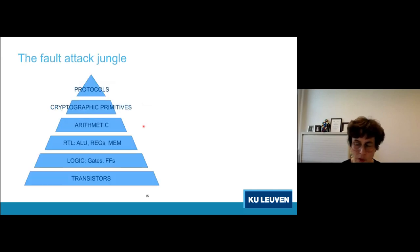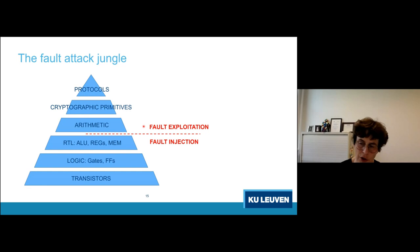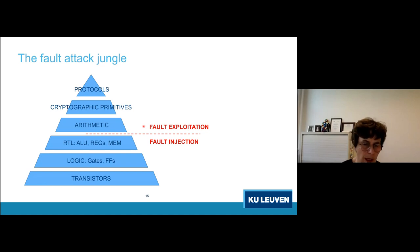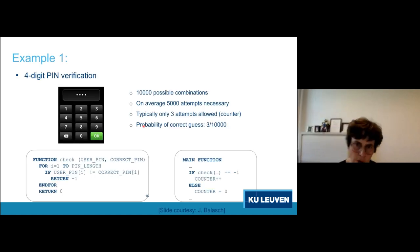The same happens with fault attacks. Fault injection often occurs at lower levels of abstraction — at the RTL, logic, or gate level — but the fault exploitation happens at higher levels of abstraction. Linking those two together defines the fault models we use. I have three small examples to illustrate this.